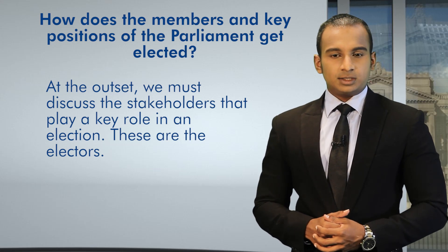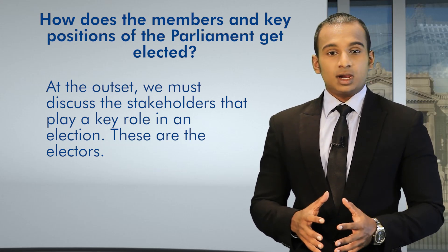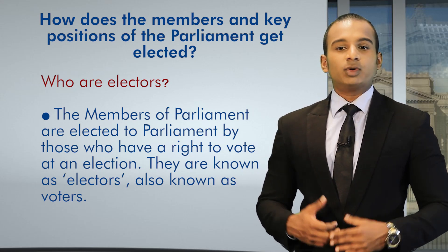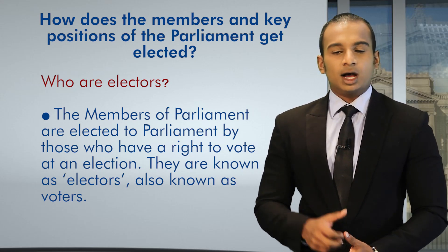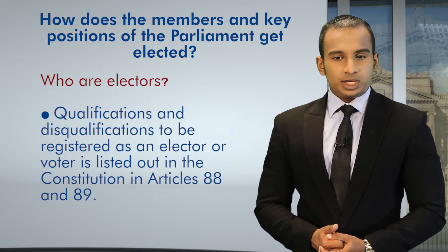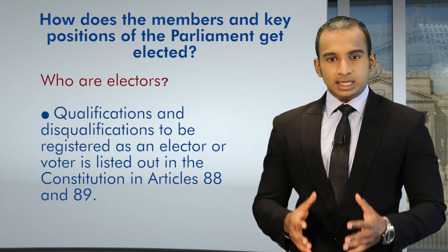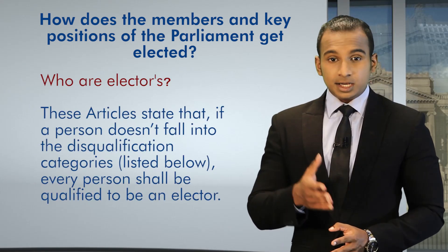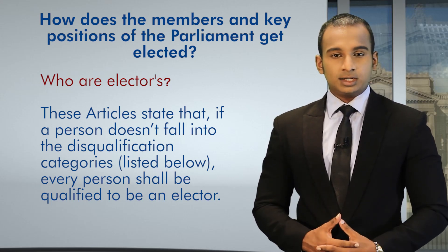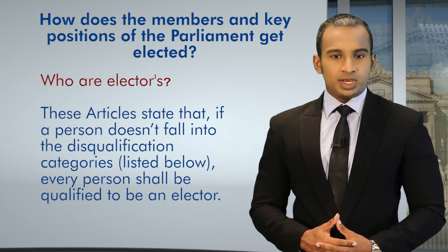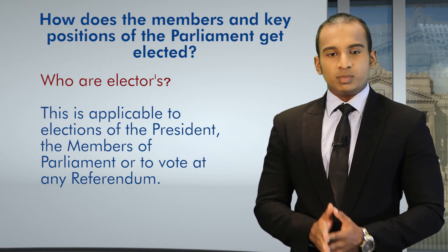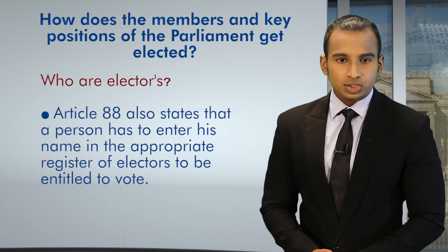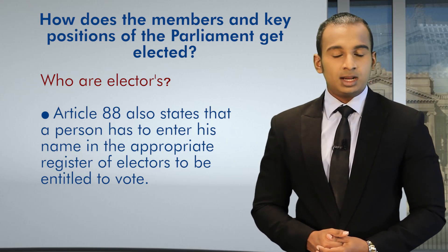At the outset, we must discuss the stakeholders that play a key role in elections. These are the electors or the constituents. The Members of Parliament are elected to Parliament by those who have a right to vote at an election. They are the people known as electors, also known as voters. Qualifications and disqualifications to be registered as an elector or voter are listed in the Constitution in Articles 88 and 89. These articles state that if a person doesn't fall into the disqualification categories listed, every person shall be qualified to be an elector. This is applicable to elections of the President, Members of Parliament, or to vote at any referendum. Article 88 also states that a person has to enter his name in the appropriate register of electors to be entitled to vote.